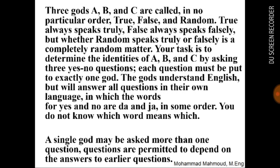Three gods, A, B, and C, are called in no particular order: True, False, and Random. True always speaks truly. False always speaks falsely. But whether Random speaks truly or falsely is a completely random matter. Your task is to determine the identities of A, B, and C by asking three yes-no questions.